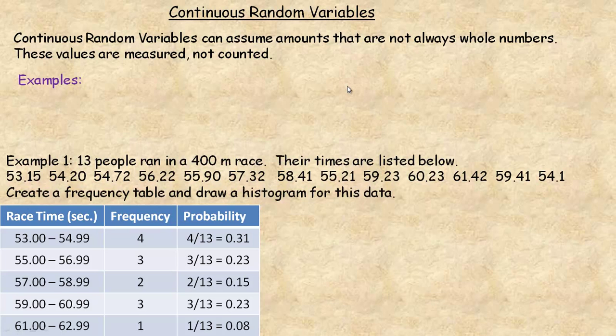In this tutorial, we're going to take a look at continuous random variables. They are random variables that can assume amounts that are not always whole numbers. They're measured and not counted.